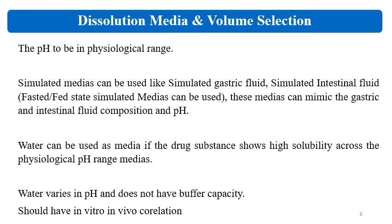The pH of the media should be in the physiological range. Generally pH 1 to 6.8 or 1.2 to 6.8 media is used, and sometimes pH 7.5 or 8 is used for specific formulations. Simulated media can be used like simulated gastric fluid (SGF) and simulated intestinal fluid (SIF) to understand formulation behavior under in vivo conditions. Fasted and fed simulated media can mimic gastric and intestinal fluid composition and pH.